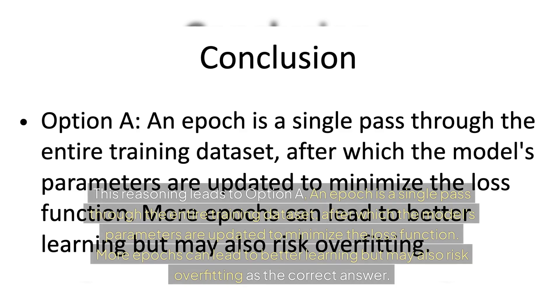This reasoning leads us to option A: an epoch is a single pass through the entire training dataset, after which the model's parameters are updated to minimize the loss function. More epochs can lead to better learning, but may also risk overfitting — making option A the correct answer.